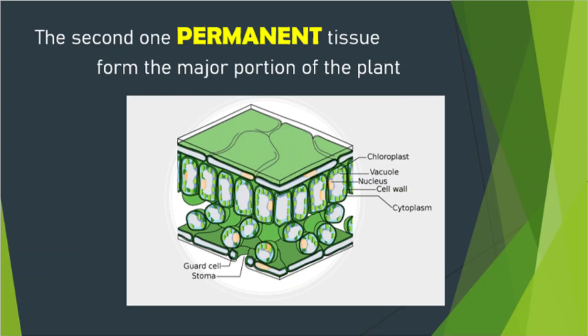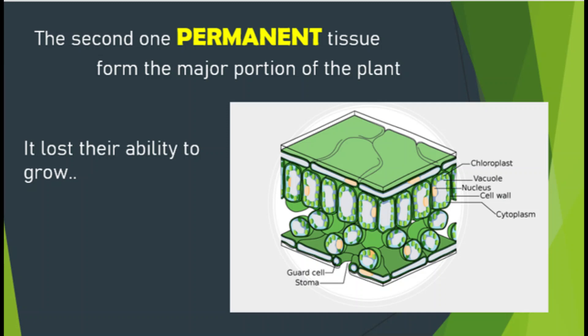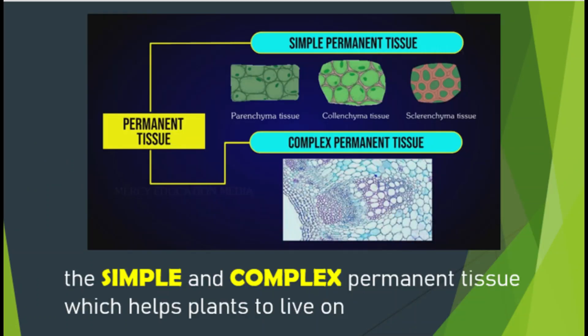The second type is permanent tissue, which forms a major portion of the plant. It has lost the ability to grow and is further divided into two types: simple and complex permanent tissue.